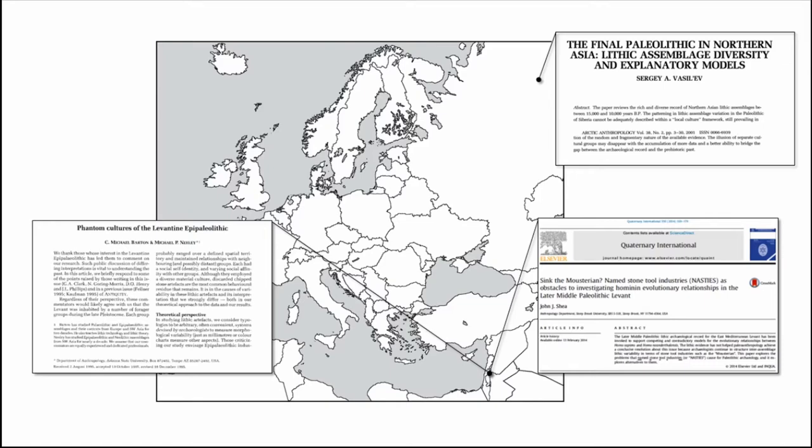How can we identify what Barton and Neely call so-called phantom cultures — cultures which don't exist only in the means with which we've made them? And thinking more broadly, how do we as archaeologists support the notions made by different researchers, test these analytical units, and finally abandon old terms that remain in the literature and which we continue to use day after day?